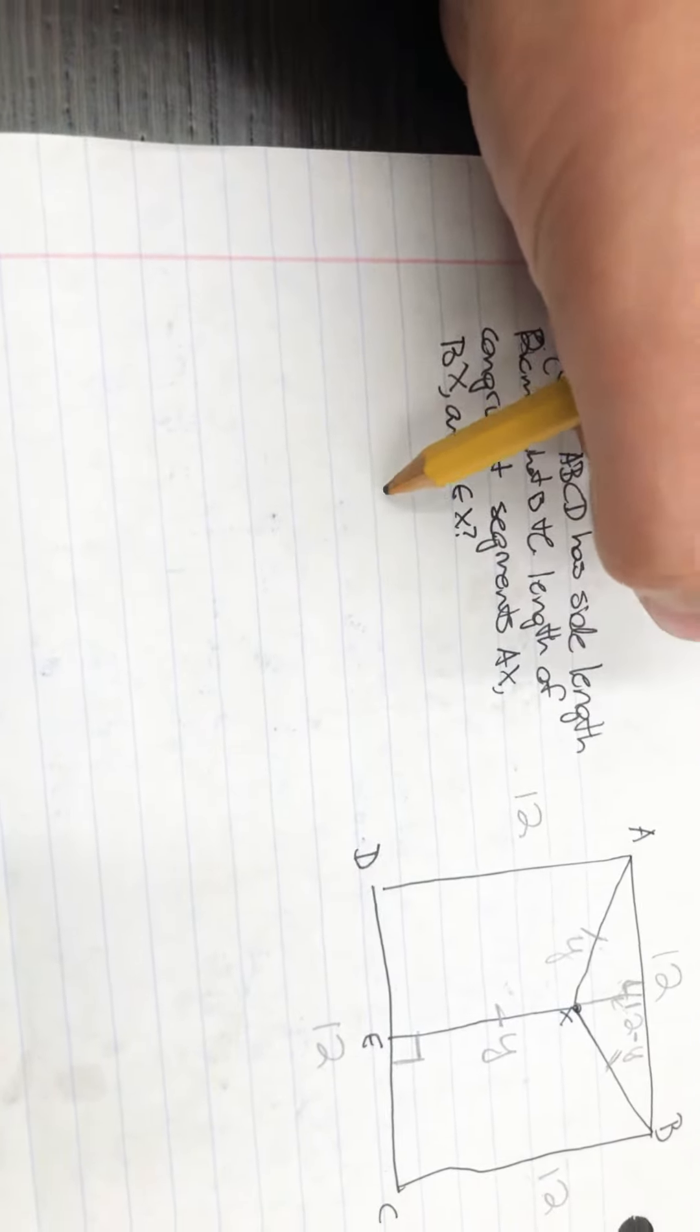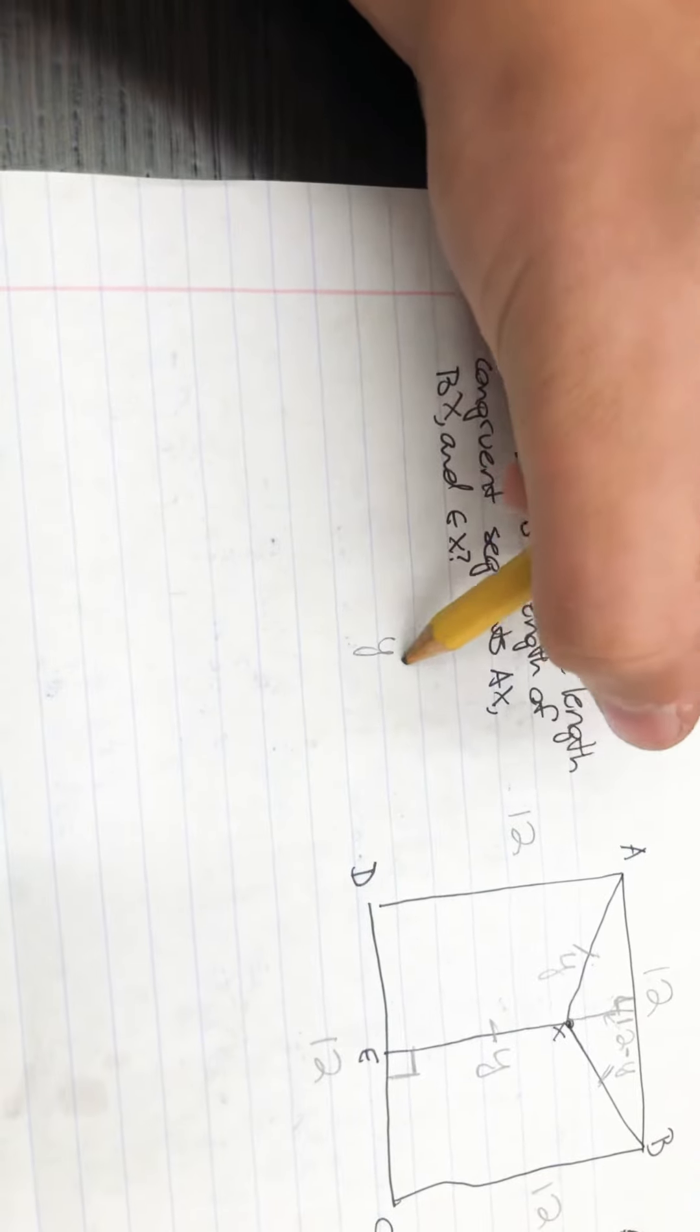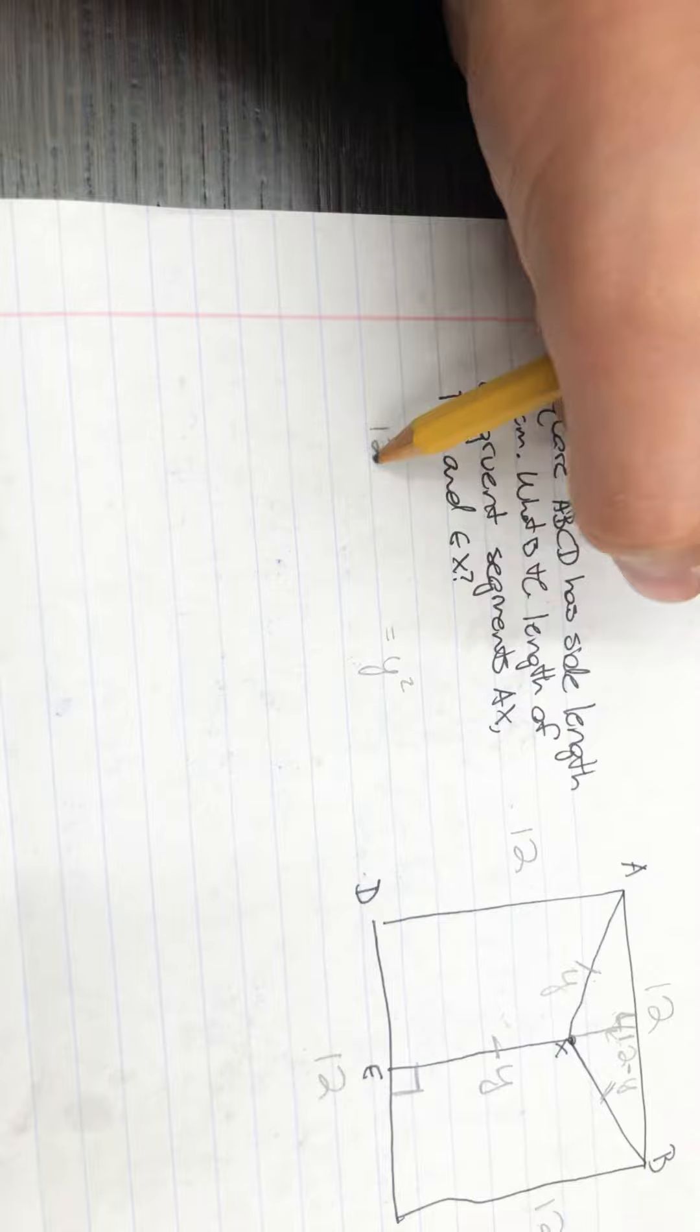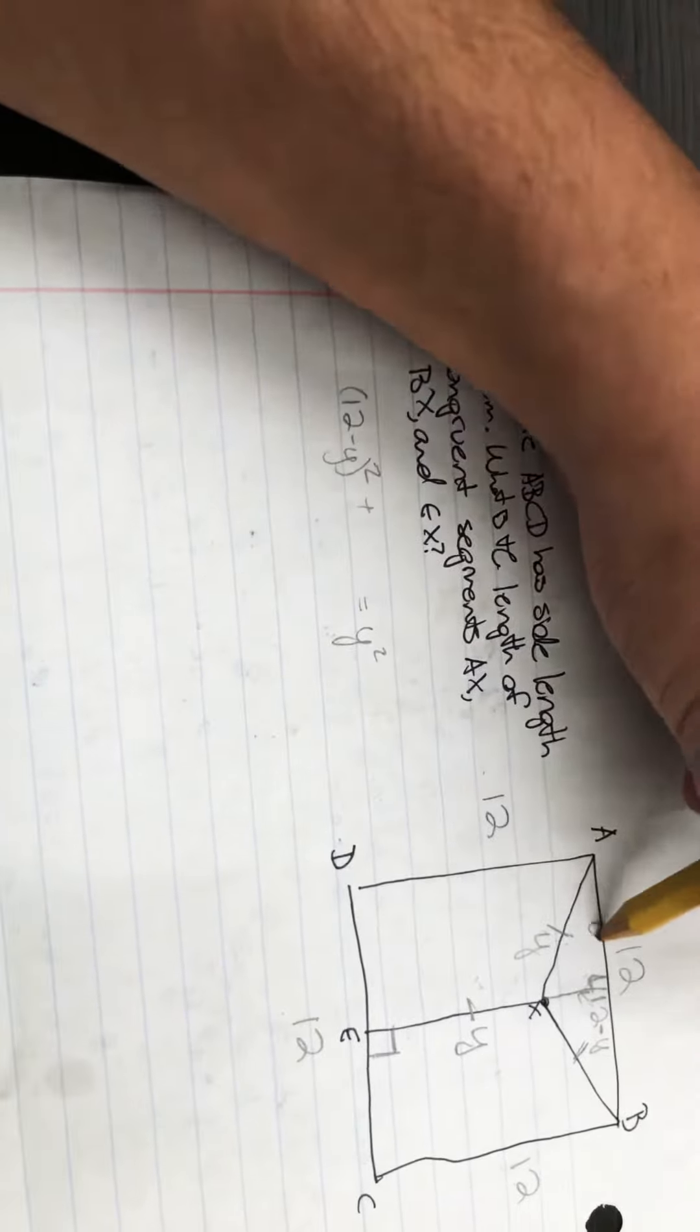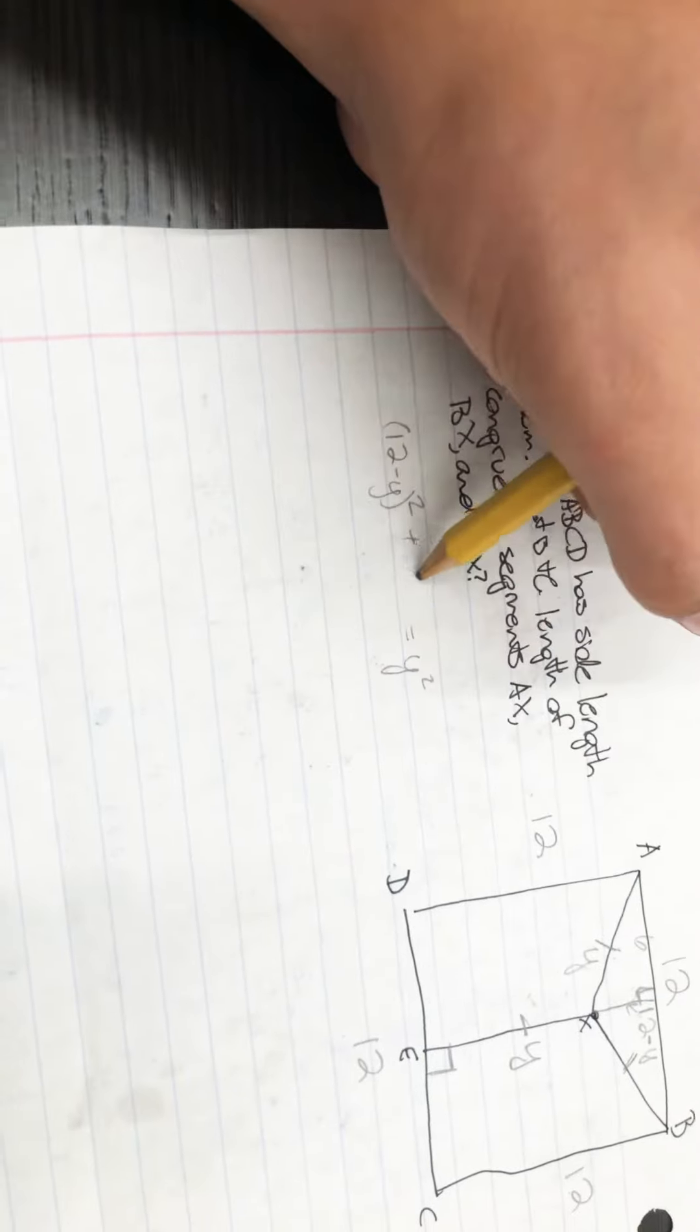And now I'm just going to use Pythagorean's theorem. So I'll have Y squared is equal to 12 minus Y squared plus, and then half of this is 6 squared.